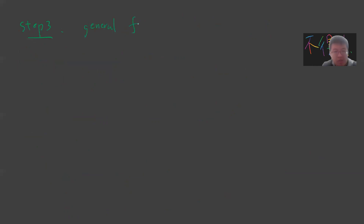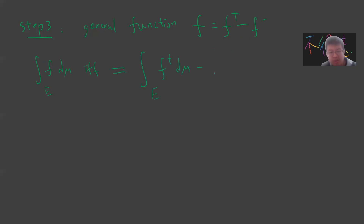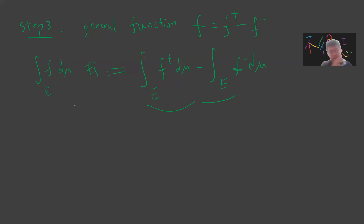Step three: general functions. For a general function f that may be negative, you can write it as the difference of two non-negative functions f = f⁺ − f⁻. Then define the integral of f d mu over E as the integral of f⁺ minus the integral of f⁻, provided both exist. If both are finite, we are happy. However, this can be plus or minus infinity. This is the definition of integration with respect to a general measure.